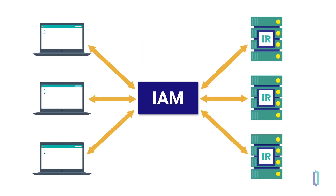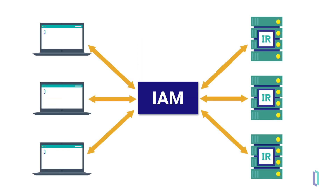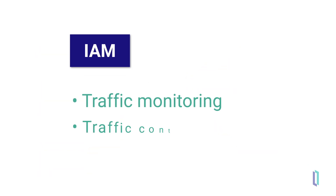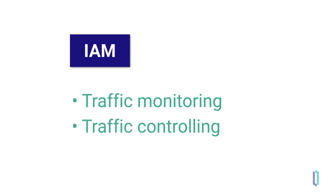IAM acts as an API gateway between your downstream and upstream applications. It provides huge benefits in two major areas: traffic monitoring and traffic controlling.